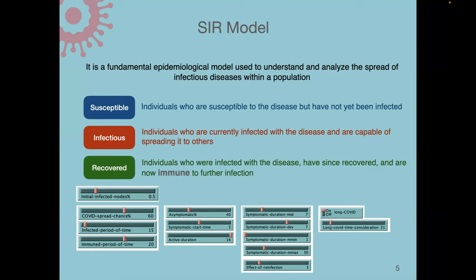Another important feature was long COVID. It is considered based on a threshold: if individuals still have symptoms after that threshold, they are classified as long COVID. We also considered a small portion of cases that were super-immune, which was very small but was reported in the data, so we included it in the model.